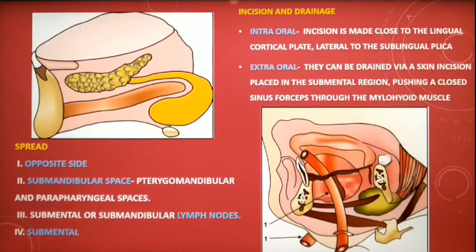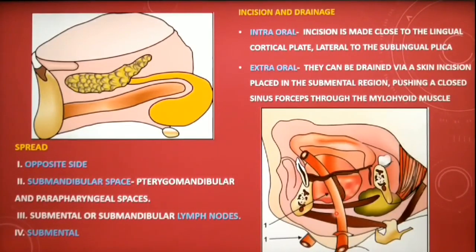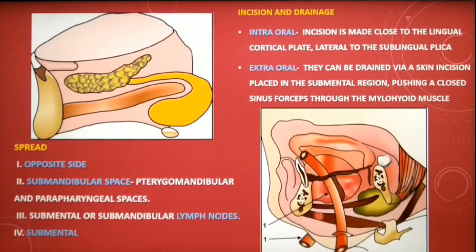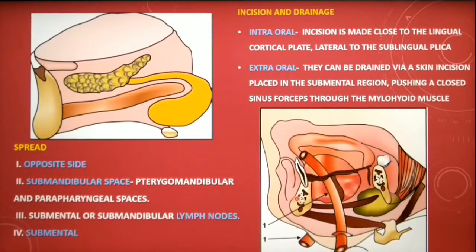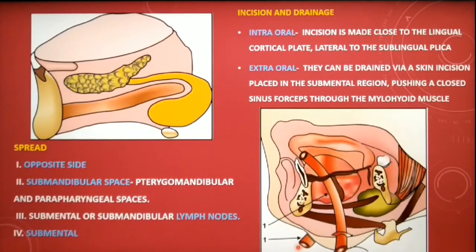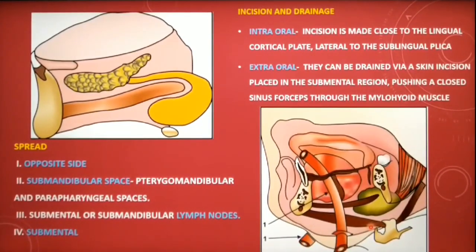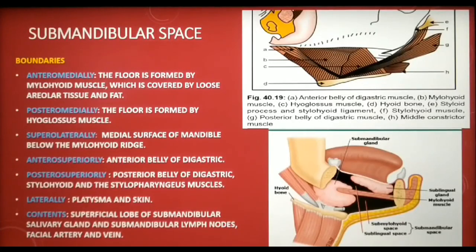The sublingual space is evacuated: an incision is placed, drainage is performed, and a corrugated rubber drain is inserted into the space through the extraoral incision. It passes the anterior belly of the mylohyoid muscle and emerges into the sublingual space. This is performed bilaterally — through the same incision, two rubber drains can be placed into the sublingual space on either side.